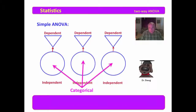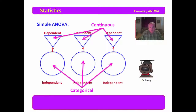The independent variables are required to be categorical — these are generally nominal data. They might be things such as ethnicity, or groupings such as the type of two-year institution, whether it's public, proprietary, or private. The dependent variables are continuous, meaning they are at least interval data, if not ratio data.